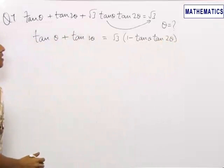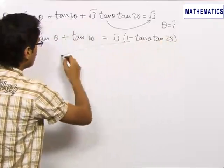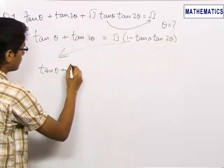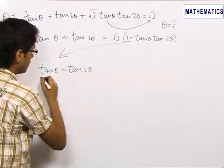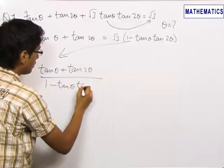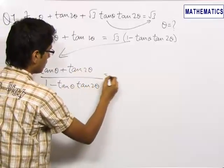Now, we bring this 1 minus tan θ tan 2θ to the denominator of LHS and it becomes tan θ plus tan 2θ upon 1 minus tan θ tan 2θ equals √3.